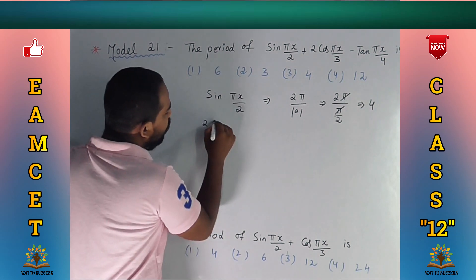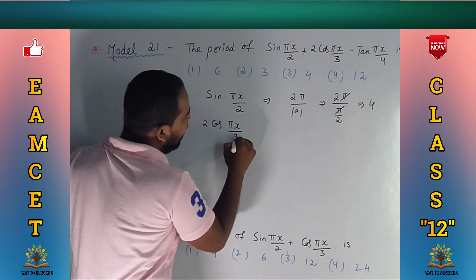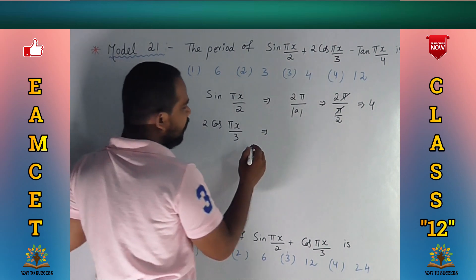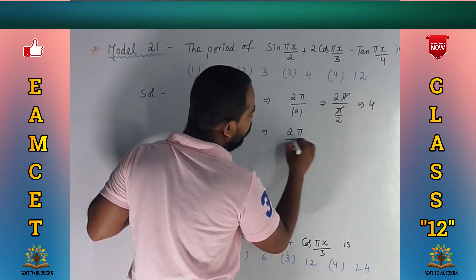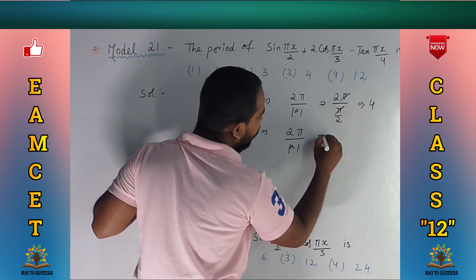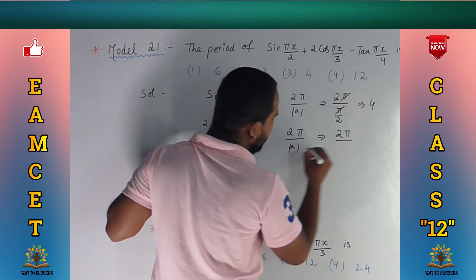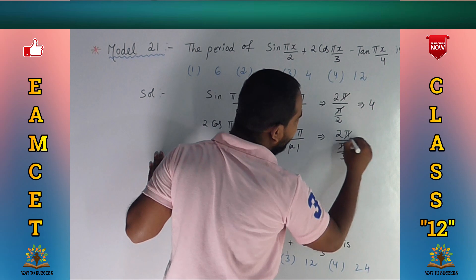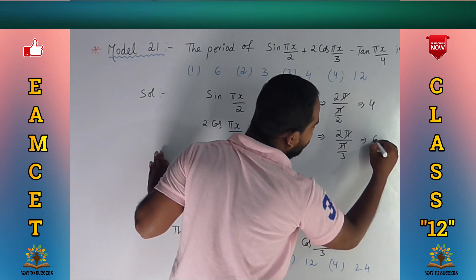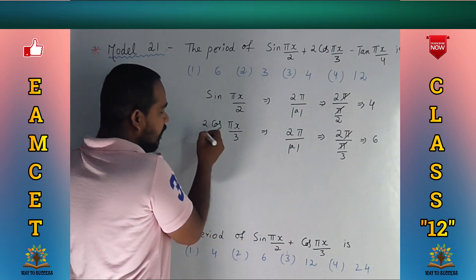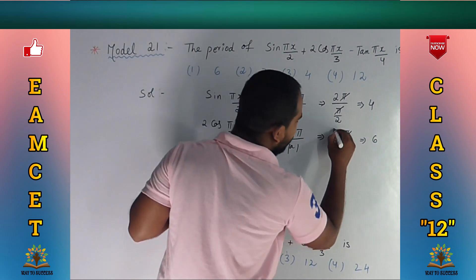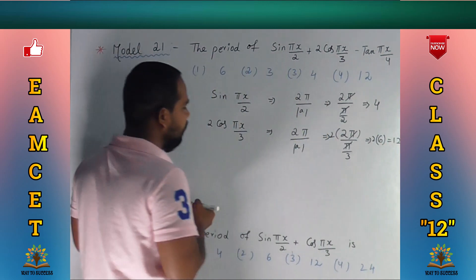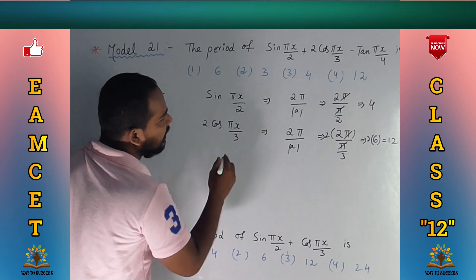Now coming to 2cos(πx/3). For cosine the period formula is also 2π divided by the modulus of a. Here a = π/3, so period = 2π/(π/3). The π's cancel and the remaining value is 6. But we also have the coefficient 2 in front, so 2 multiplied gives us 12. The period of 2cos(πx/3) is 12.